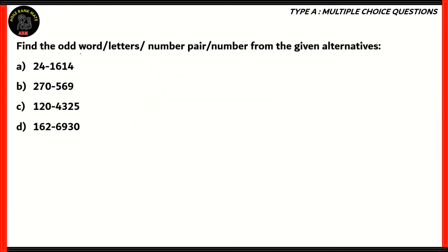Let's look at this question. Find the odd word, letter, or number pair or number from the given alternatives. We have two numbers paired with each other: 24-1614, 270-569, 120-4325, 162-6930. How do we solve this question? We need to find out what relation exists between three of these options that the fourth one does not have.